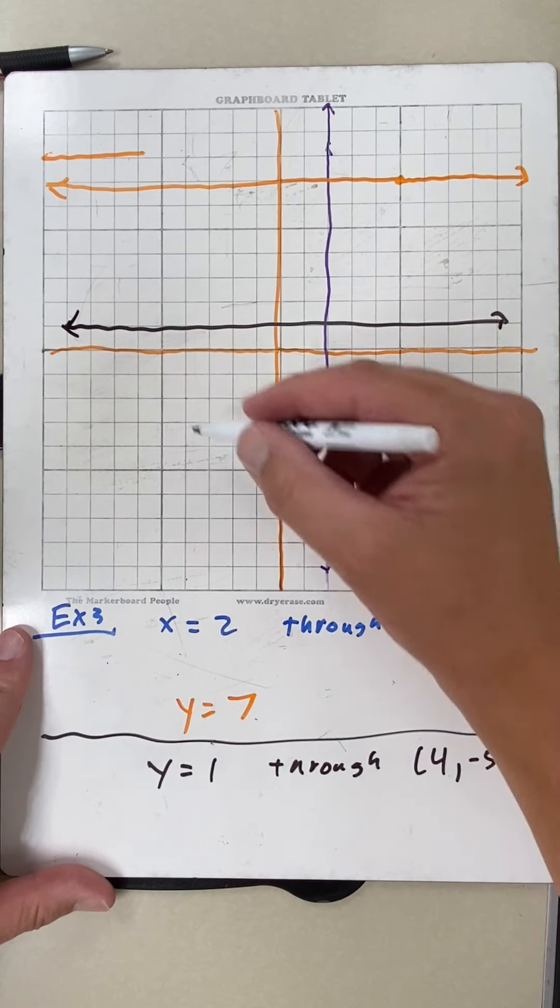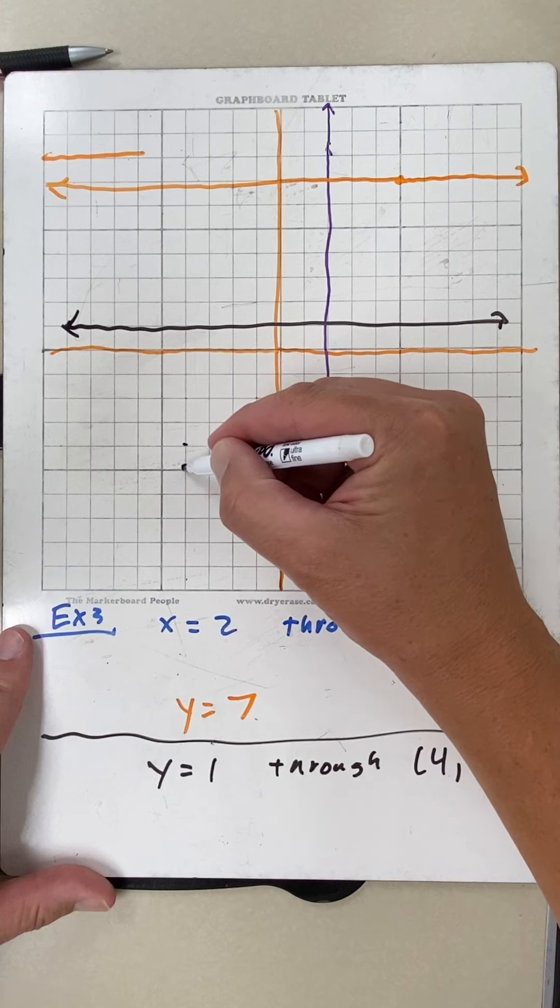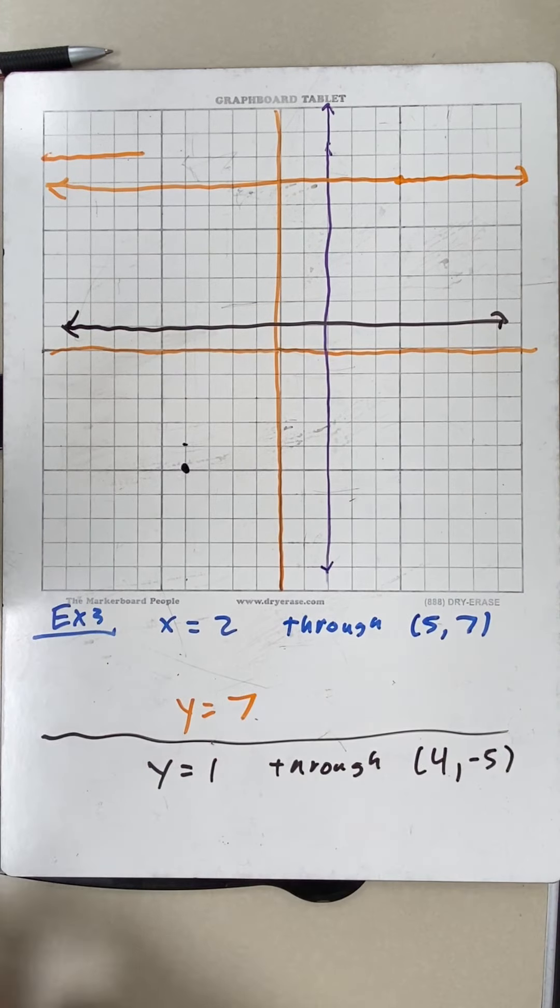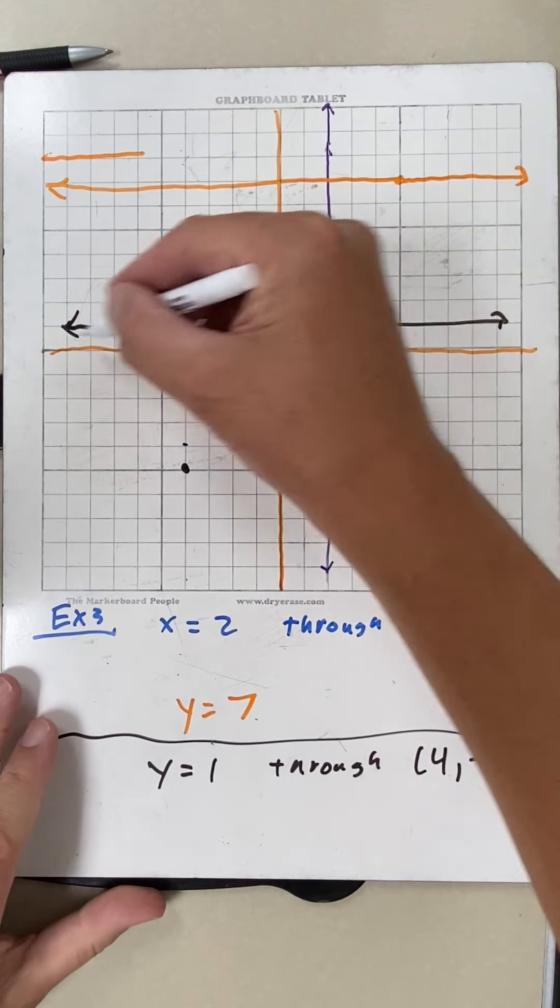And the point 4, negative 5, left 4, down 5 is right here. So if we want perpendicular, this time we need to get a line that's going vertical to this line.